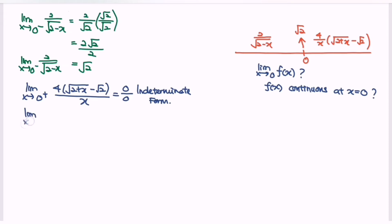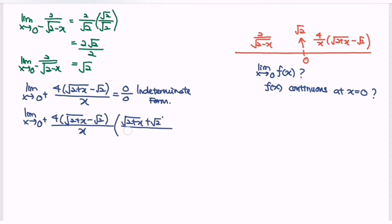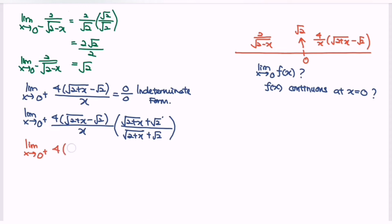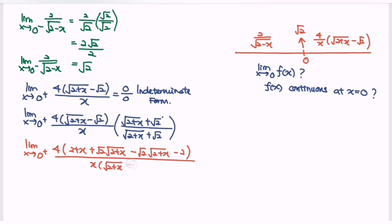The limit when x approaches 0 from the right of 4 multiplied with square root of 2 plus x minus square root of 2, over x. The conjugate will be square root of 2 plus x plus square root of 2, over square root of 2 plus x plus square root of 2. Remember, only expand one part — the numerator. Expanding: 4 bracket, we will have 2 plus x, then plus square root of 2 multiplied with square root of 2 plus x, minus square root of 2 multiplied with square root of 2 plus x, minus 2, over x multiplied with square root of 2 plus x plus square root of 2.